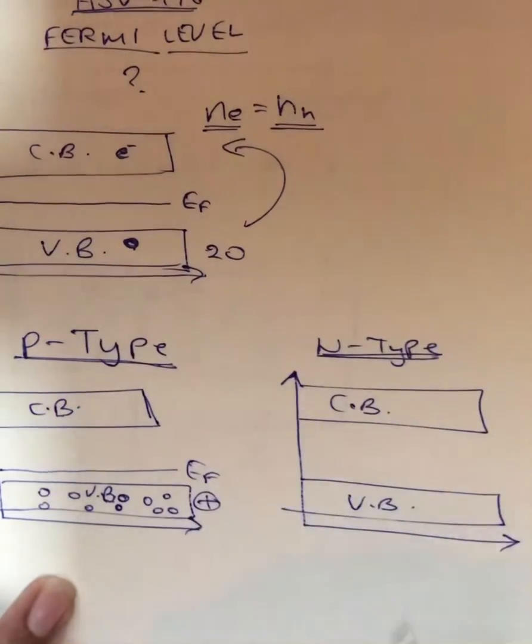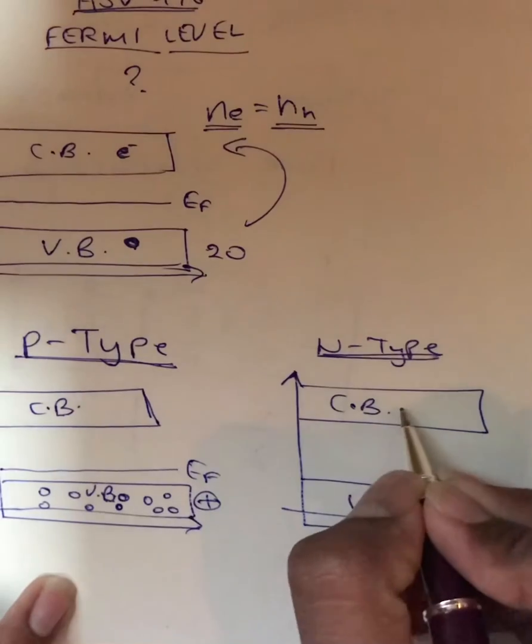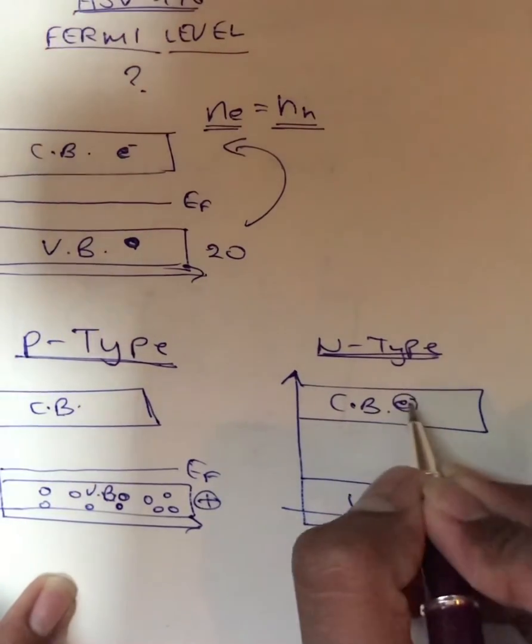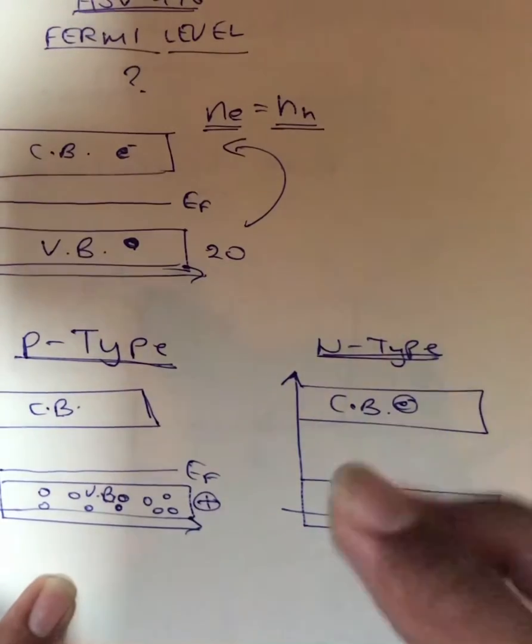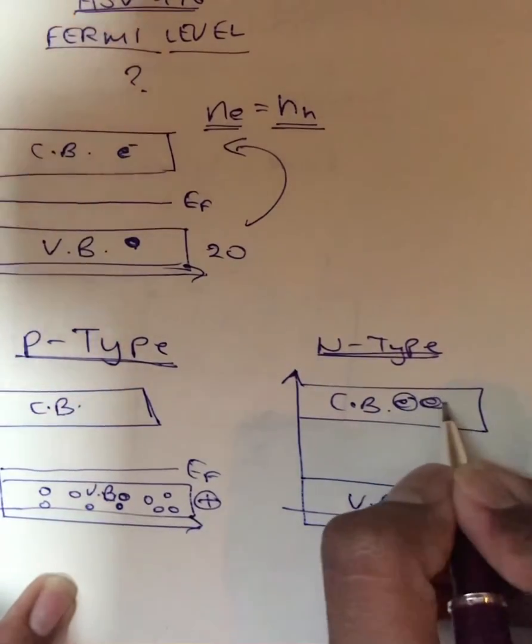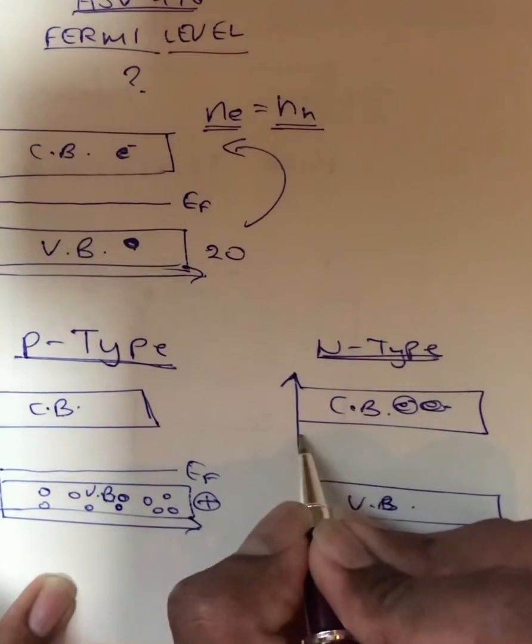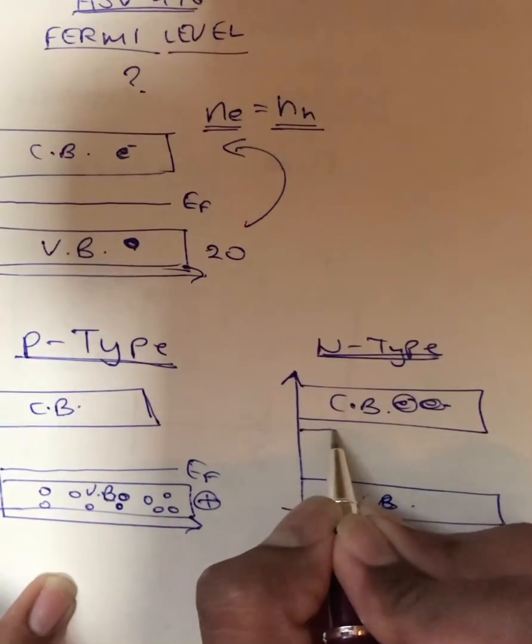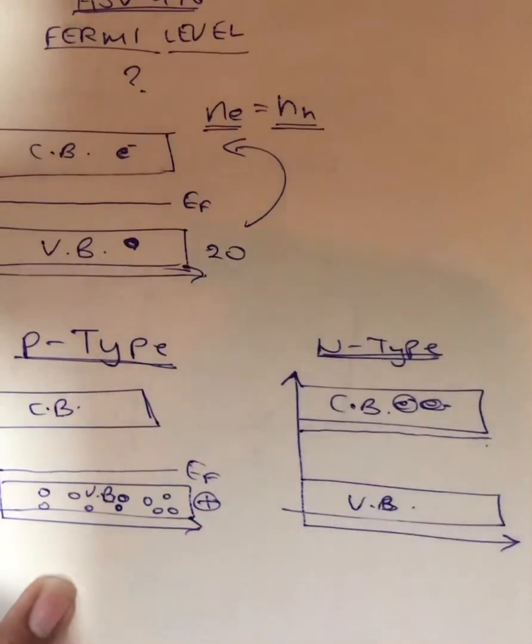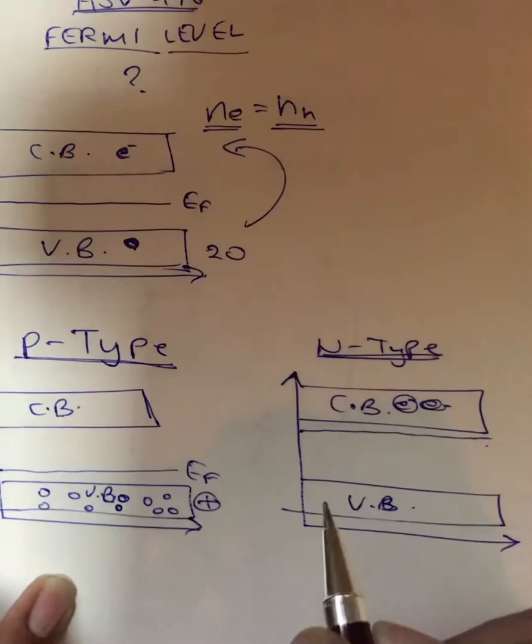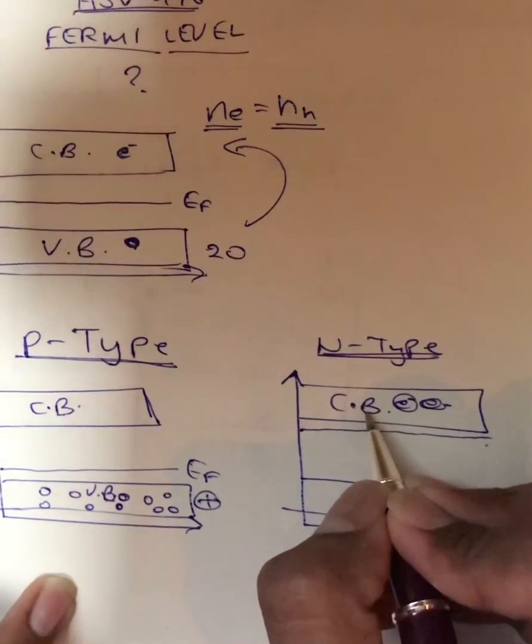And we all know that in the n-type semiconductors there are electrons which are excited from the valence band. But since the number of excited electrons is greater in the conduction band, therefore the Fermi level will lie nearer to the conduction band because in n-type semiconductor the majority charge carriers are electrons and electrons are mostly found in the conduction band.